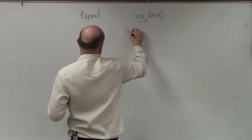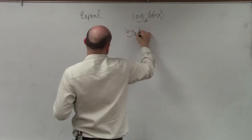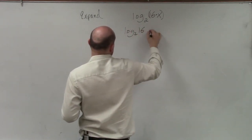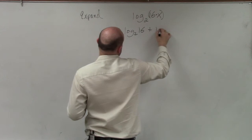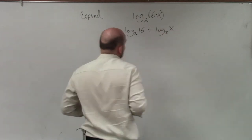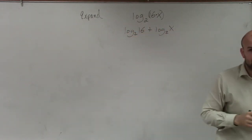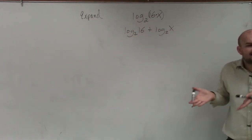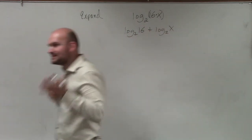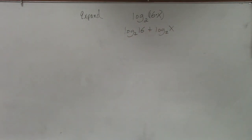So I can rewrite this now as log base 2 of 16 plus log base 2 of x. Basically, we're just doing the exact opposite of what we did before. Now we're breaking them apart — instead of trying to bring them together, we're just breaking them apart into two different logarithms.